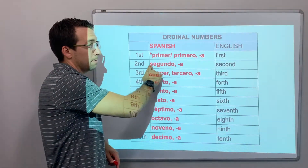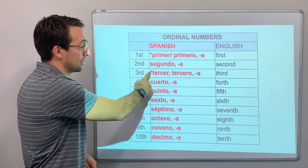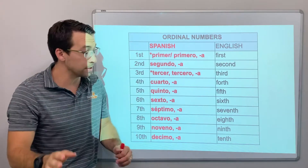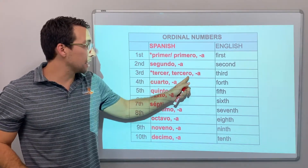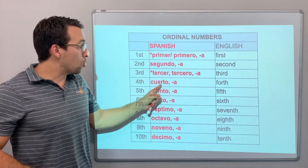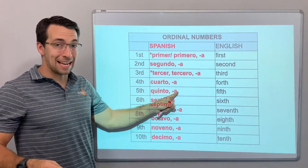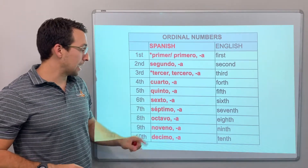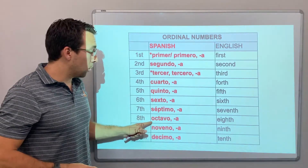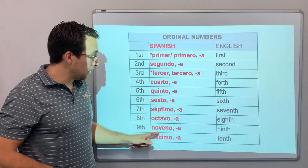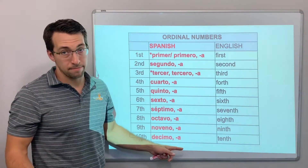Primer. Primero. Primera. We're going to get to that asterisk momentarily. Segundo. Tercer. Tercero. Tercera. Cuarto or cuarta. Quinto. Quinta. Sexto. Sexta. Séptimo. Séptima. Octavo. Octava. Noveno. Novena. Décimo. Décima.